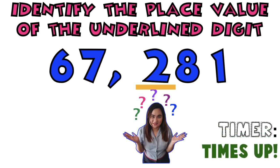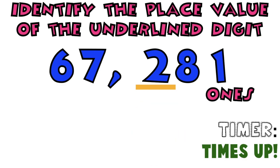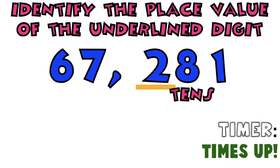Let's see if your answer is correct. In identifying the place value, we are going to start from right to left. Let's start at digit 1. Digit 1 is ones. Very good. Digit 8 is tens.